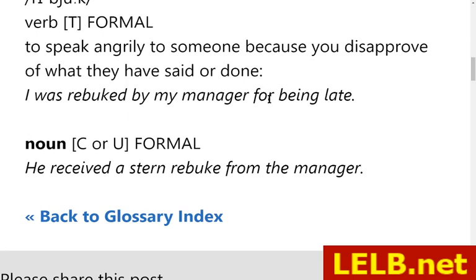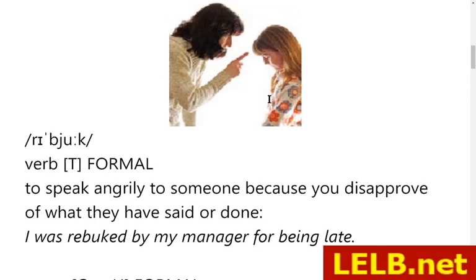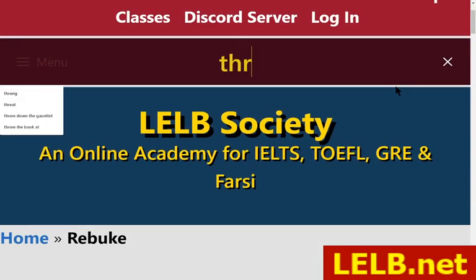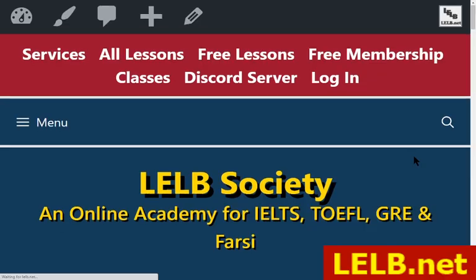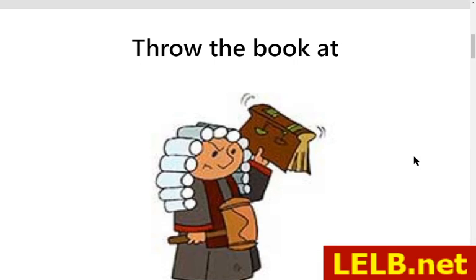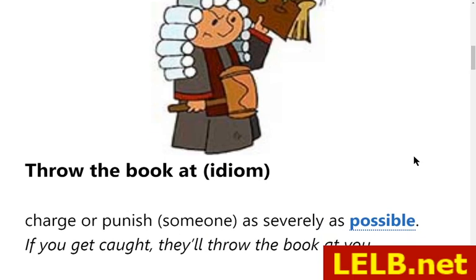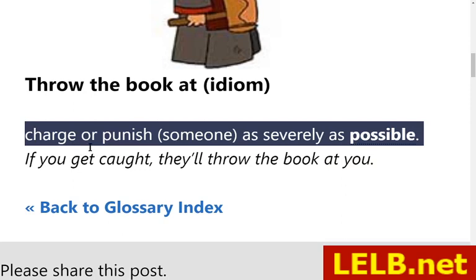The next word is the idiom 'throw the book at somebody.' It generally originated in the court atmosphere as a legal term, but its scope of meaning became larger. When somebody throws the book at somebody else, it means criticizing or punishing them very strongly — as severely as possible. Judges used to throw the book at criminals in a court of law.